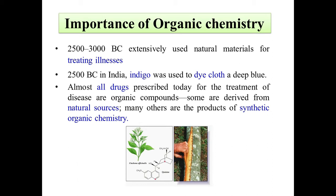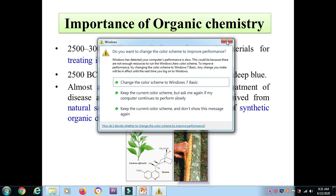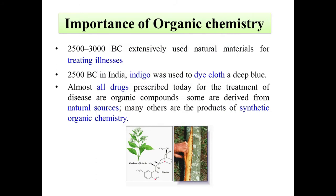Why is organic chemistry important? From 2500 to 3000 BC, natural materials were extensively used for treating illness. Around 2500 BC in India, indigo was used to dye cloth a deep blue. Almost all drugs prescribed today for the treatment of disease are organic compounds — some derived from natural sources, many others products of synthetic organic chemistry.